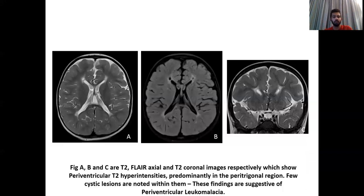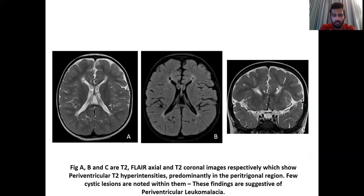In this case, image A is a T2 image, image B is a FLAIR axial, and the T2 coronal image shows periventricular T2 hyperintensities predominantly in the peritrigonal regions. A few cystic lesions are also noted within them. These are suggestive of periventricular leukomalacia.